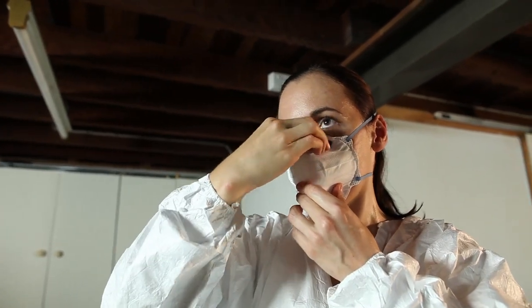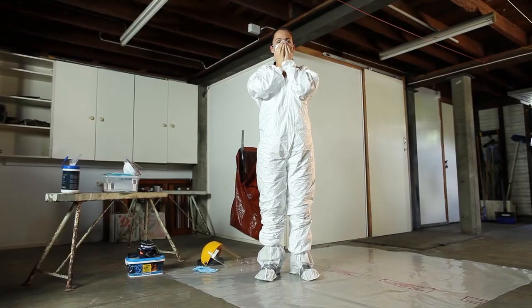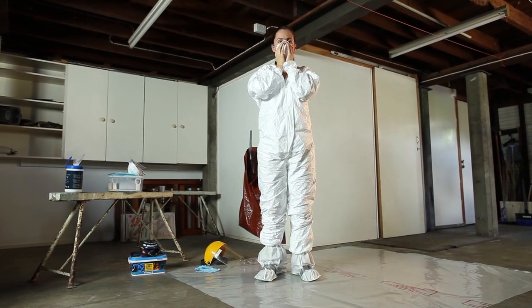To ensure there is an airtight seal, make sure your face is clean shaven. Fit checking will determine if the respirator seals correctly and can be done in two ways, depending on whether your respirator has valves. If you're using a disposable respirator and it does not have a valve, place your hands over the respirator and breathe out hard. If the seal isn't good, you'll feel air leaking out from the edges of the mask.